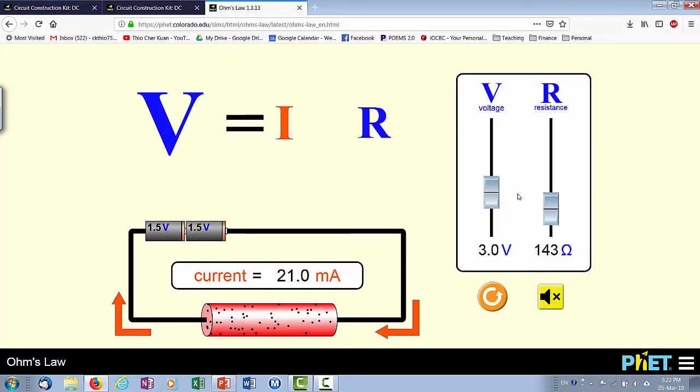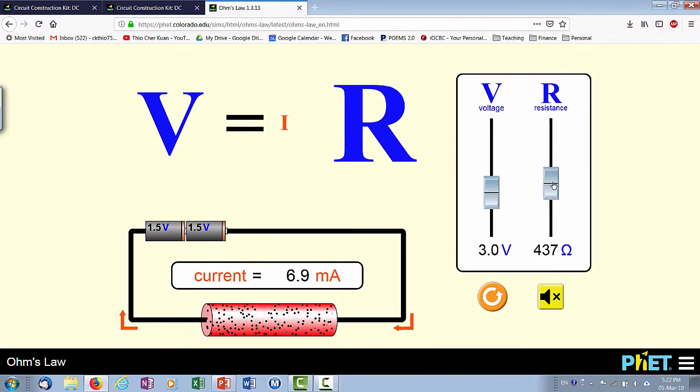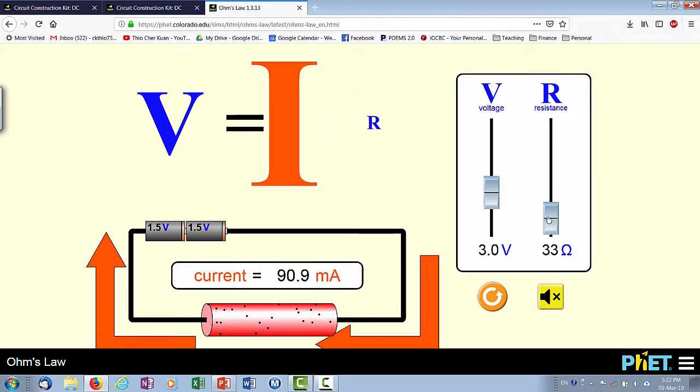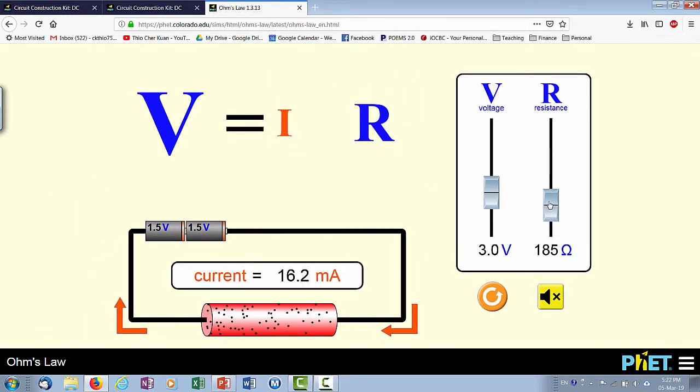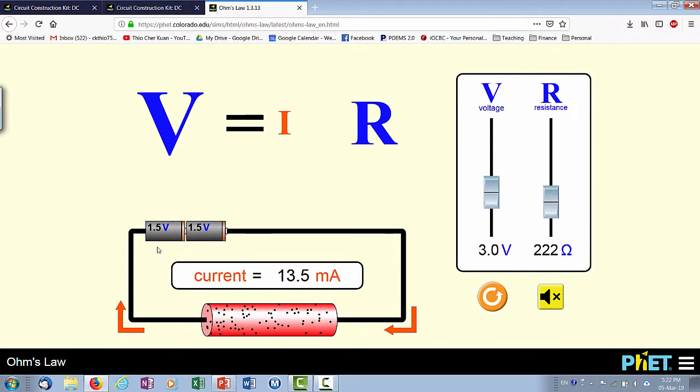Using this simulation, we find that no matter how we change the R, you find that the V is always unchanging. You can reduce the R and I will increase, or if you increase the R, I will reduce. So I and R will always change if you change R, but the V is remaining unchanged. So that's what's meant by the battery not changing its voltage, unless you have changed the battery itself.